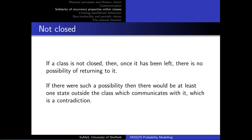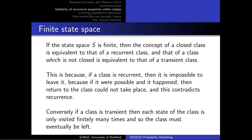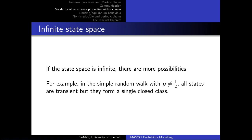In a finite state space, you're either positive recurrent or transient, and the closed classes are exactly the recurrent ones — the not-closed ones are exactly the transient ones. If a class is recurrent you can't leave it; if it's transient you have to leave it, and once you've left you certainly can't return. In the infinite state space it's messier: for example, the simple random walk has all transient states but there is a single closed class.